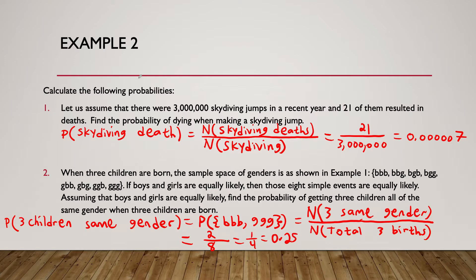As another example, assume there were three million skydiving jumps in a recent year and 21 resulted in deaths. We want to find the probability of dying when making a skydiving jump. The probability of a skydiving death is 21 deaths divided by three million jumps, which as a decimal is 0.0000007, a very small number.